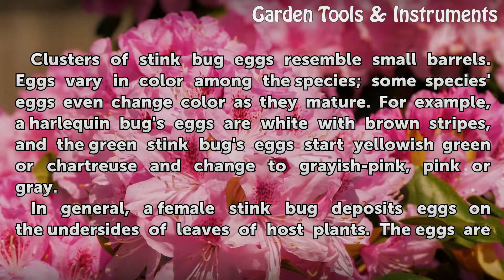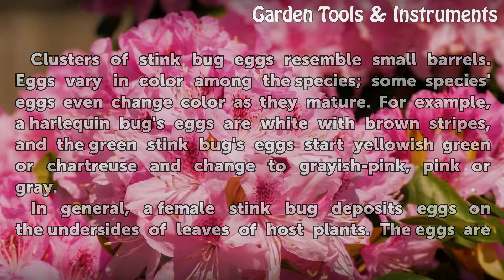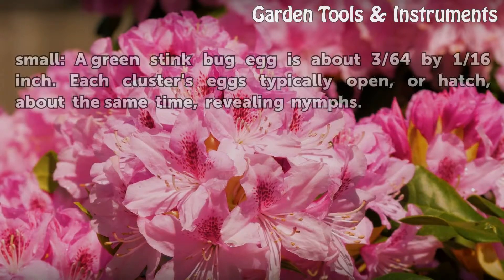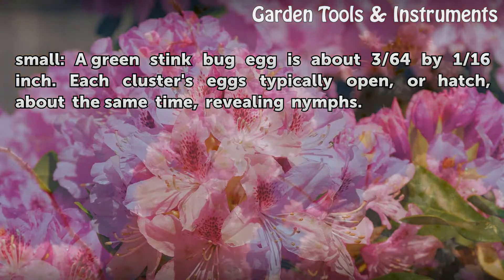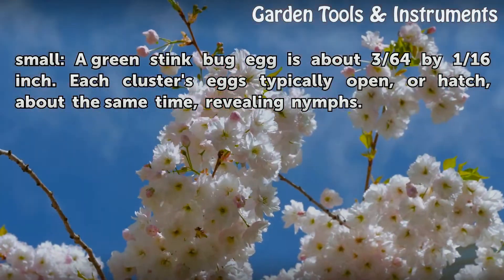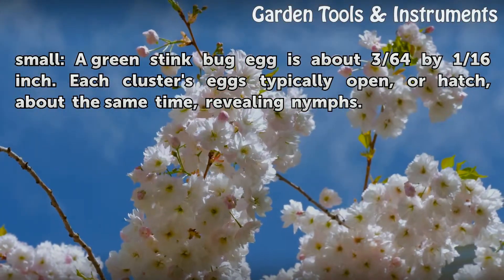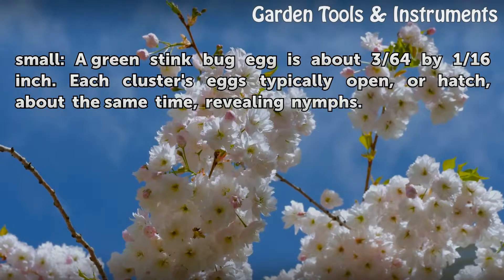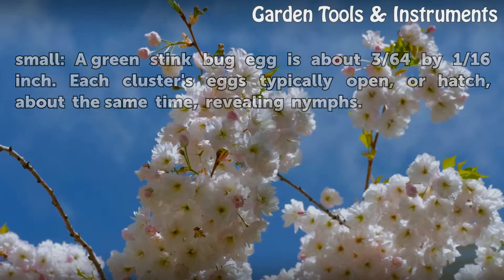In general, a female stink bug deposits eggs on the undersides of leaves of host plants. The eggs are small; a green stink bug egg is about 3/64 by 1/16 inch. Each cluster's eggs typically open, or hatch, about the same time, revealing nymphs.